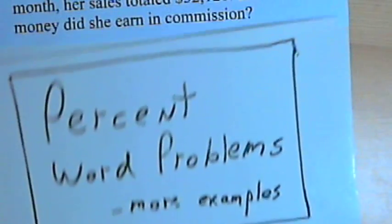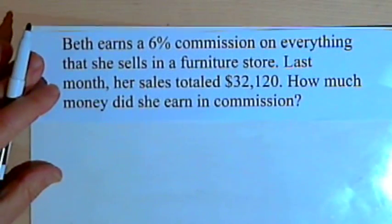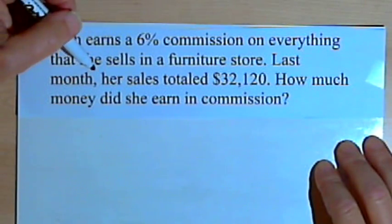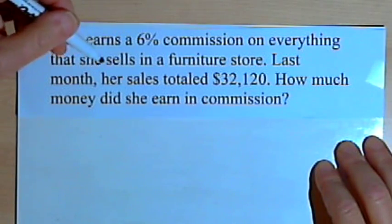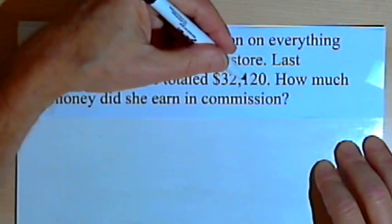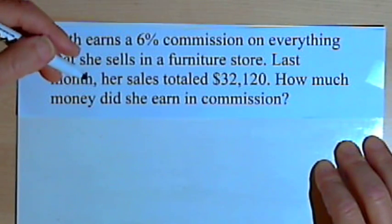So here's the first problem. Beth earns a 6% commission on everything that she sells in a furniture store. Last month her sales totaled $32,120. How much money did she earn in commission?